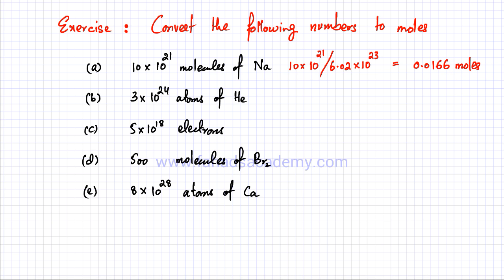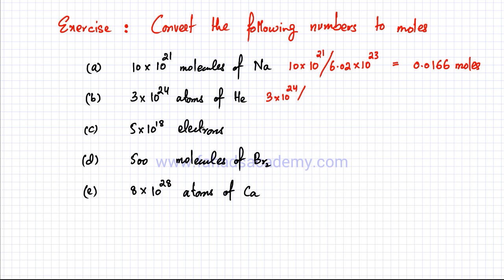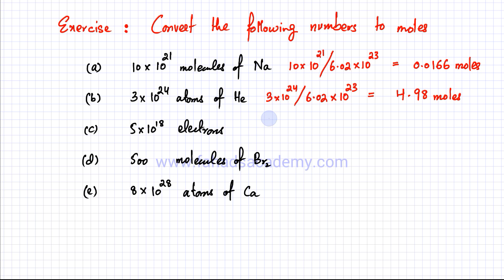For part (b), I have 3 × 10²⁴ atoms of phenium. To convert into moles, I divide 3 × 10²⁴ by 6.02 × 10²³. The answer is 4.98 moles. Remember to write down the unit — the answer is in moles.